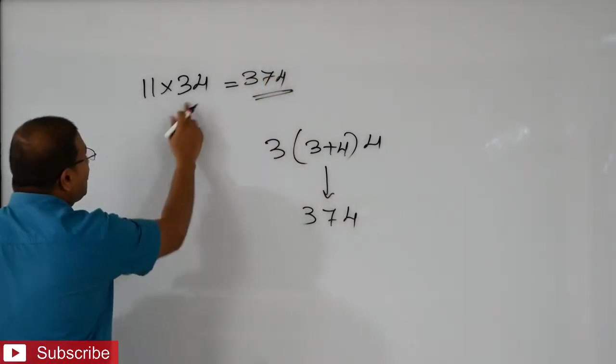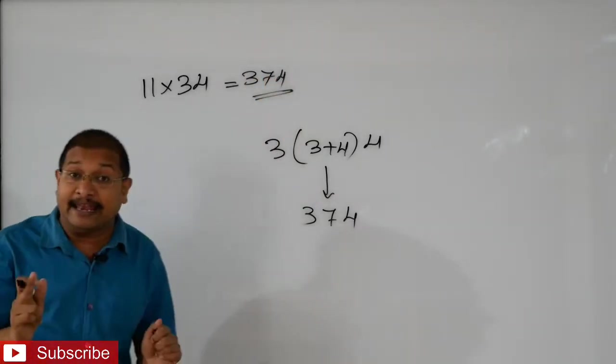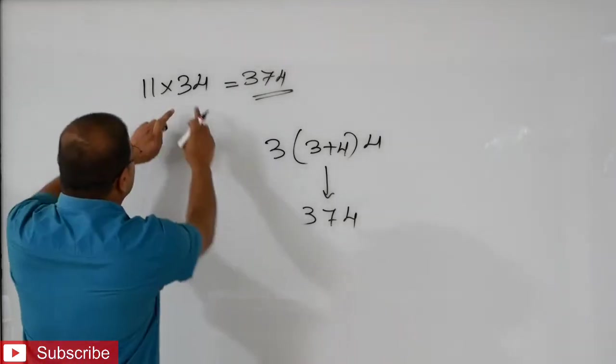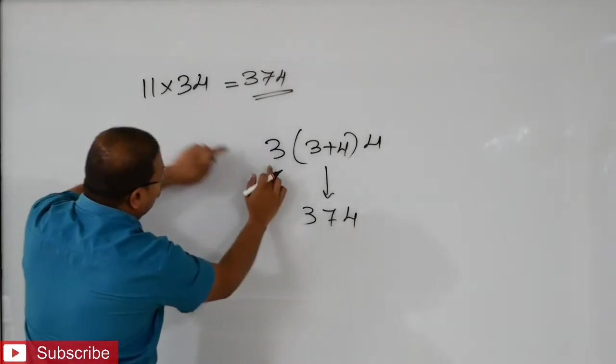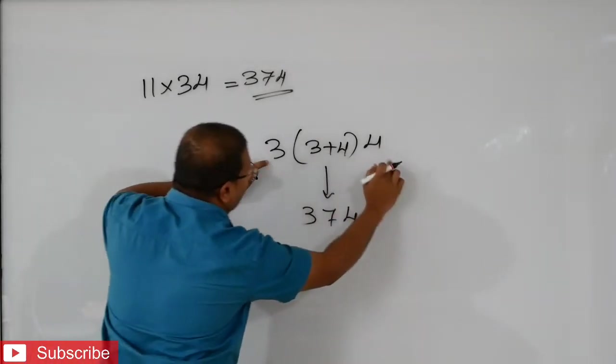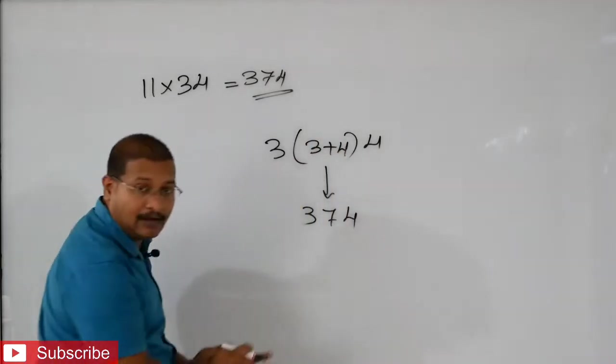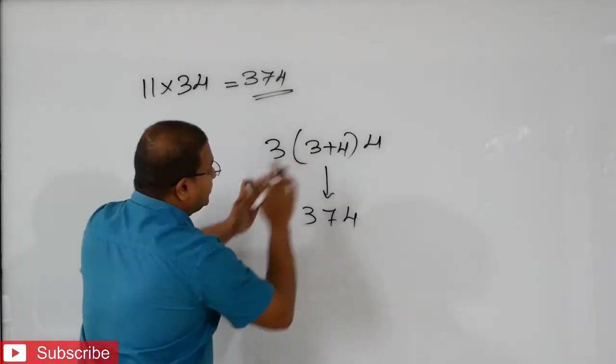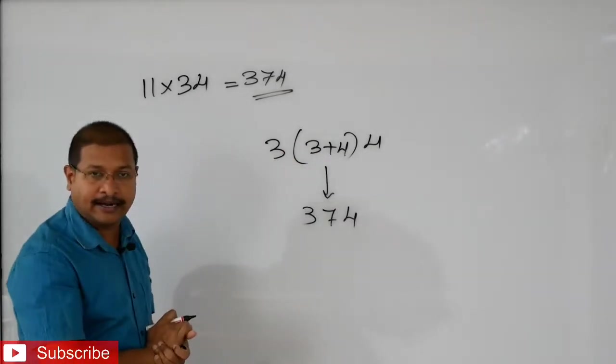See, if you want to multiply any number into 11, you write the digits first and last. After that, in the middle, you add these two digits.